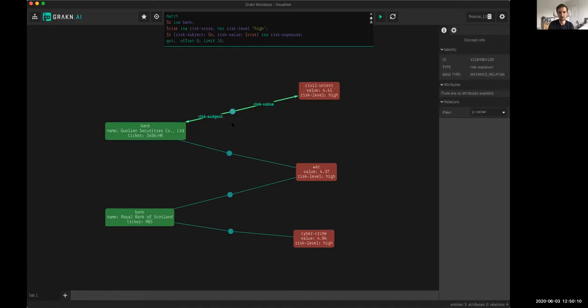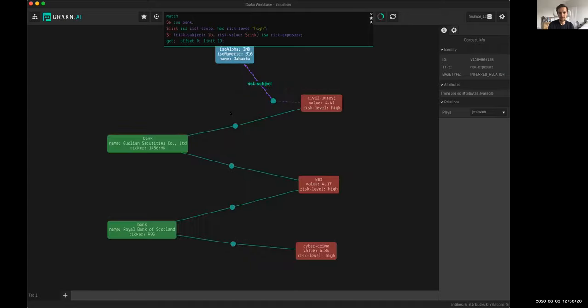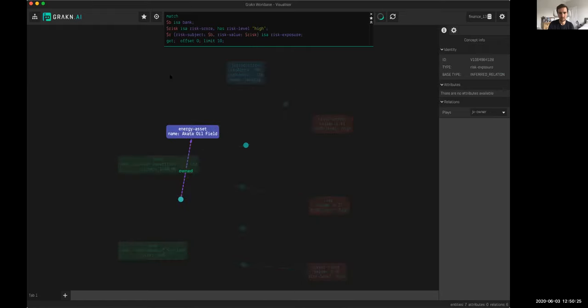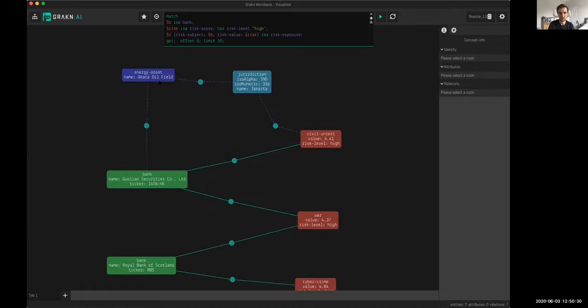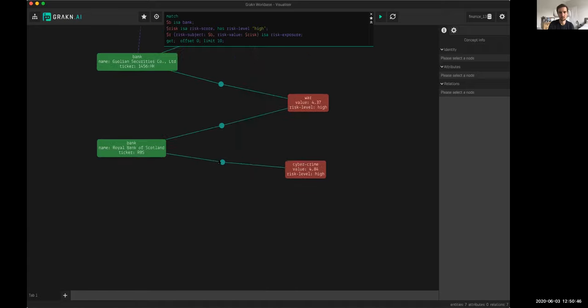What that means is we can actually dig deeper. Why were they created? If I look at this relation and press explain, I can do this programmatically through the API as well. We see that Kualion has this energy asset called Akata. Akata seems to be in this jurisdiction in Jakarta. Akata oil field is in this jurisdiction in Jakarta which is connected to that civil unrest score. We're saying there's a bank with a risky asset because it's in a risky jurisdiction.